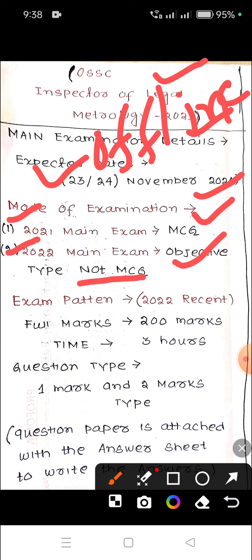In objective type, there are questions worth 1 mark and 2 marks. The answers need to be written accordingly. The 2022 exam pattern included 1 mark questions and 2 mark questions. For 1 mark questions we have to answer briefly, and for 2 mark questions we have to answer in more detail. This is the 2022 recent pattern.